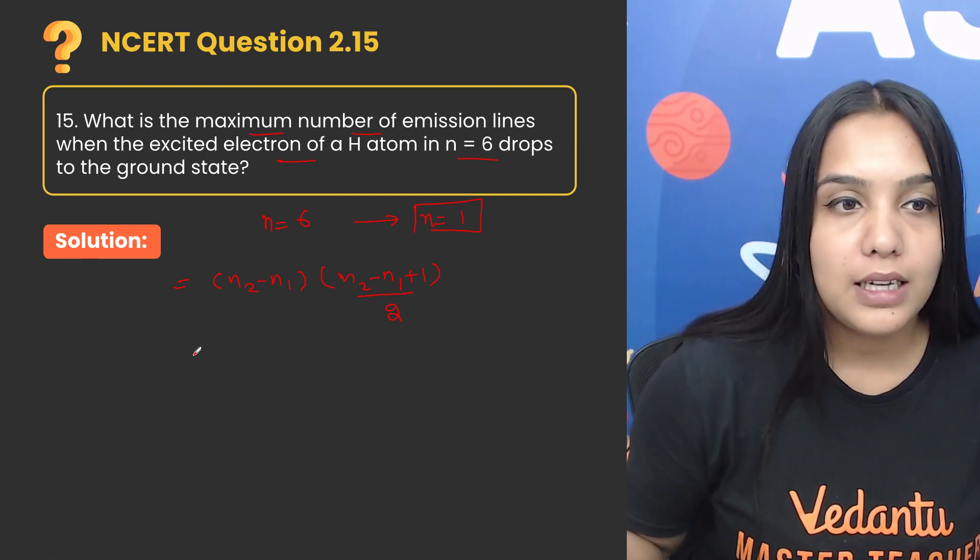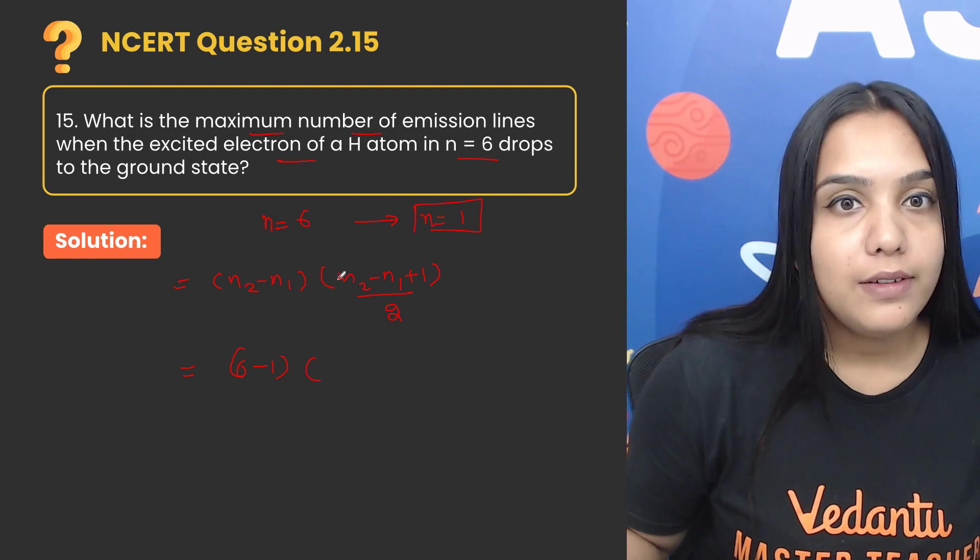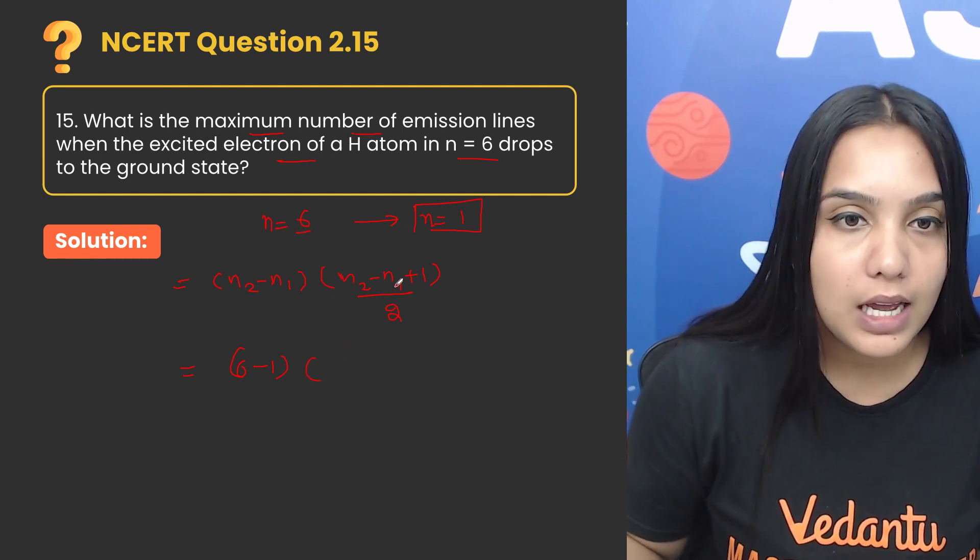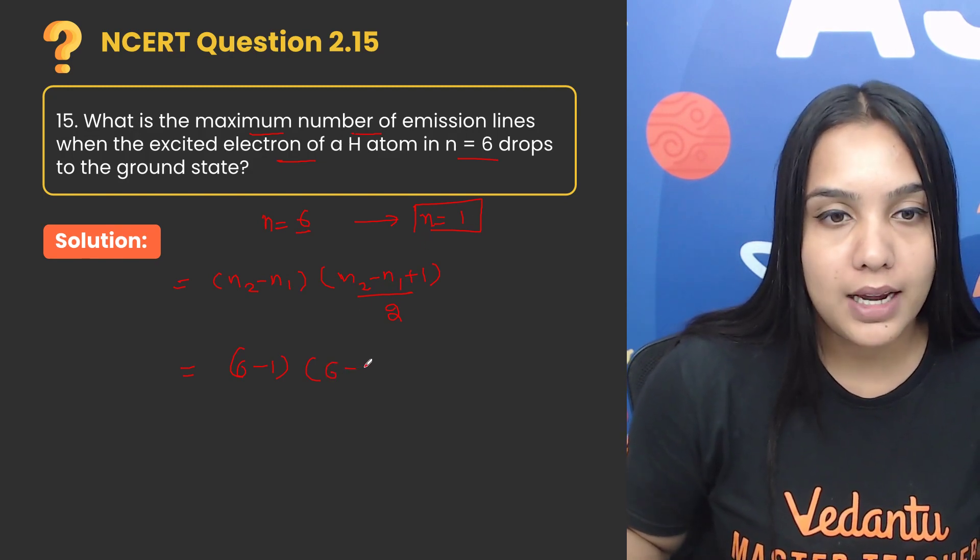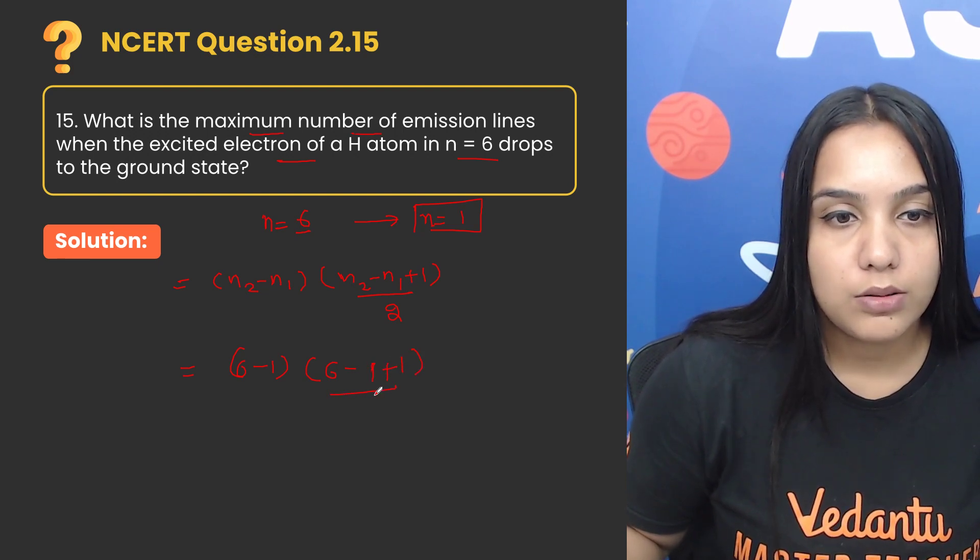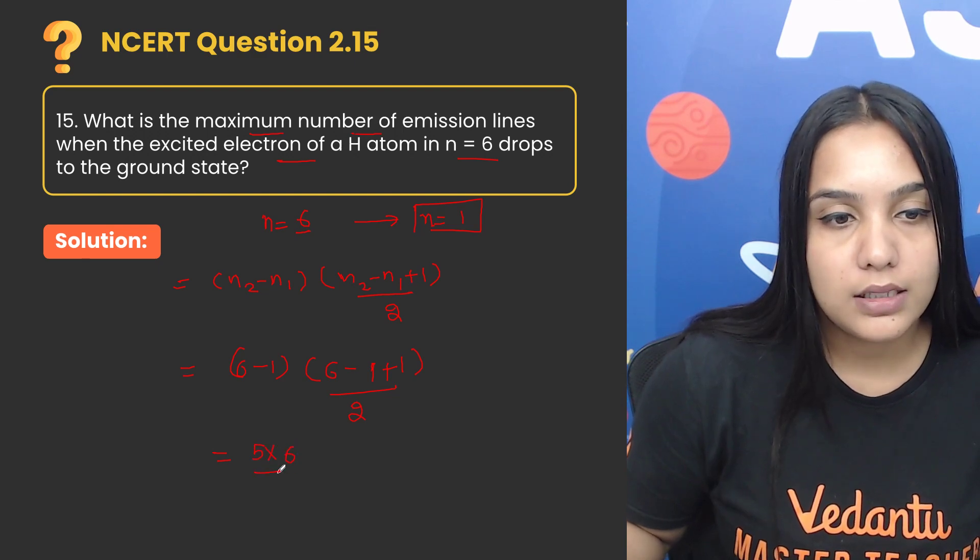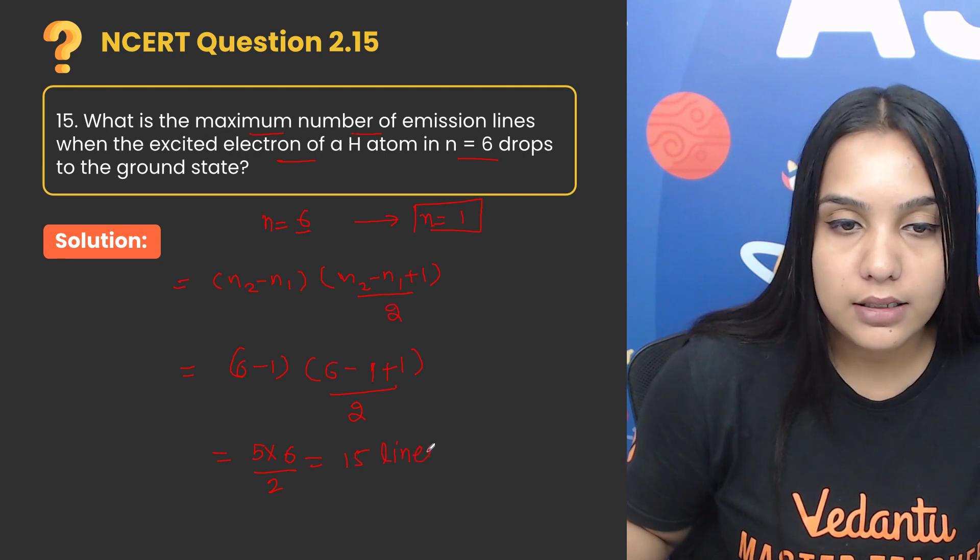So here I have 6 minus 1. The value of n2 is 6 and n1 is 1. This gives us 6 minus 1 plus 1, which equals 5 into 6 divided by 2, which comes out to be 15 lines.